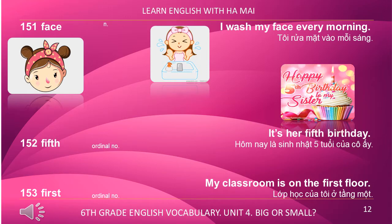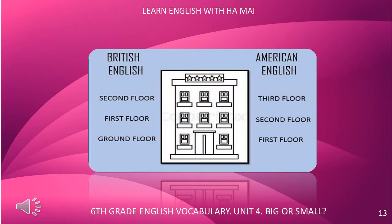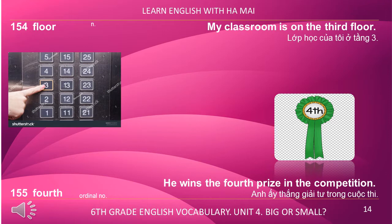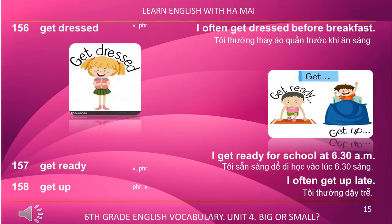First. My classroom is on the first floor. Floor. My classroom is on the third floor. Fourth. He wins the fourth prize in the competition. Get dressed. I often get dressed before breakfast.